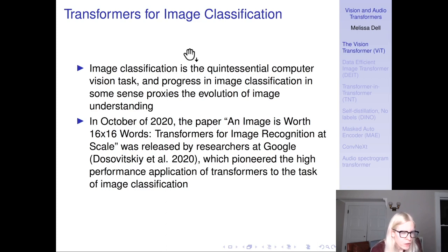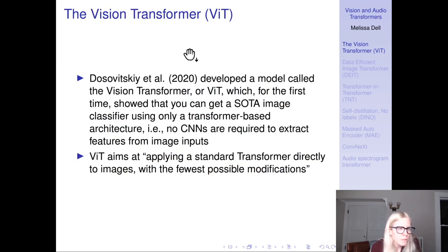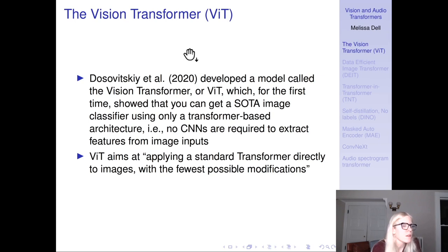In October of 2020, a paper called 'An Image is Worth 16x16 Words: Transformers for Image Recognition at Scale' was released by researchers at Google, pioneering the high-performance application of transformers to image classification. They developed a model called the Vision Transformer, or ViT, which showed for the first time that you can get state-of-the-art image classification performance with an architecture based only on transformers — no CNNs used at all to extract features. The ViT aims to apply a standard transformer directly to images with the fewest possible modifications.